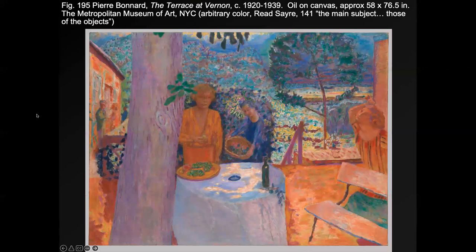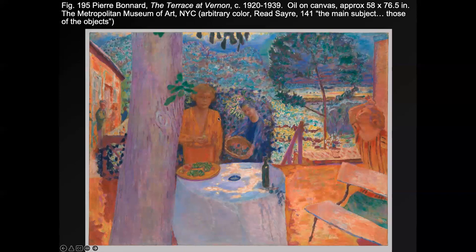Another way of using color is arbitrary color — you look at things and say you can pick whatever color you want. Is this woman an orange person? No. Is this person purple? Probably not. Are the background plants light blue and purple? No — but with arbitrary color you can pick whatever you want and get a cool color scheme, almost like a design if you were painting your walls.